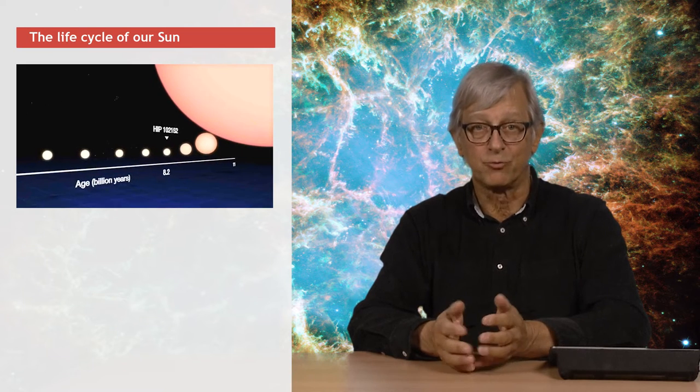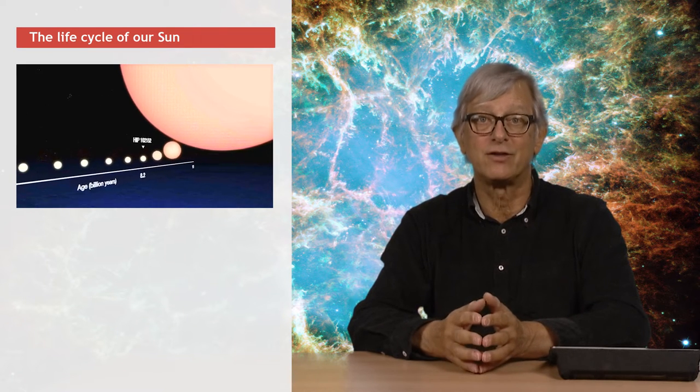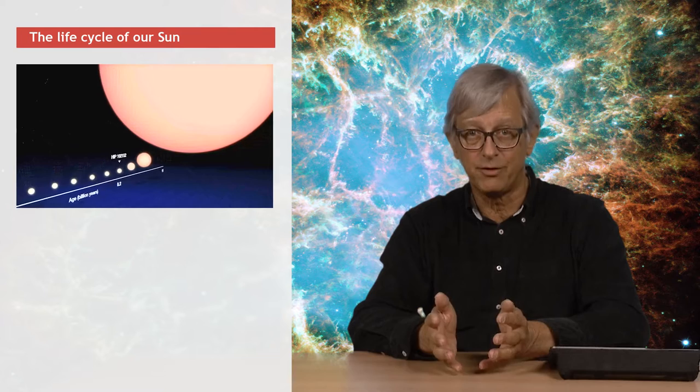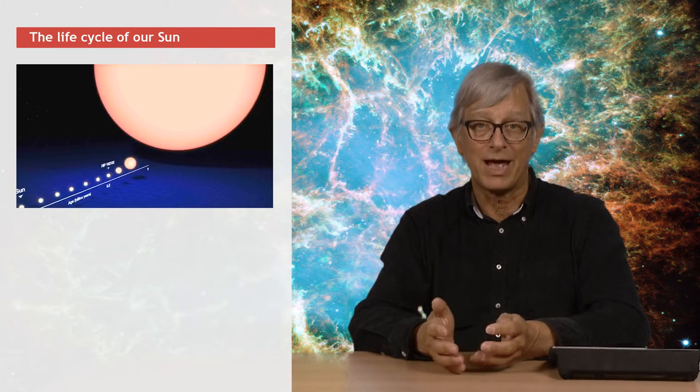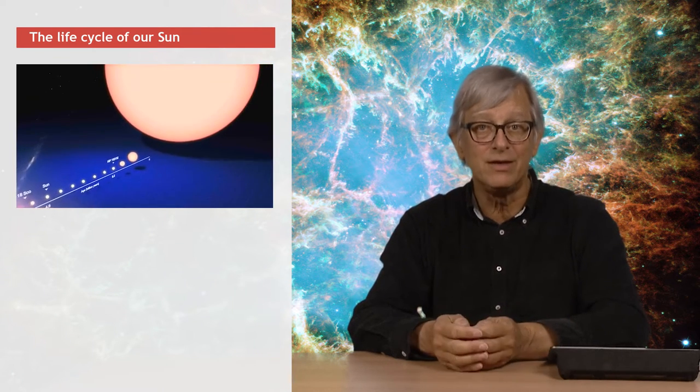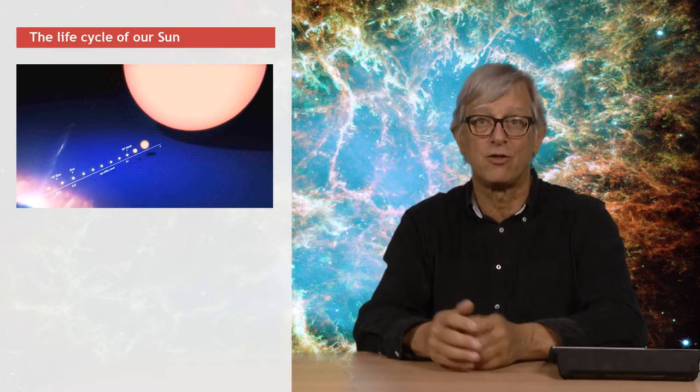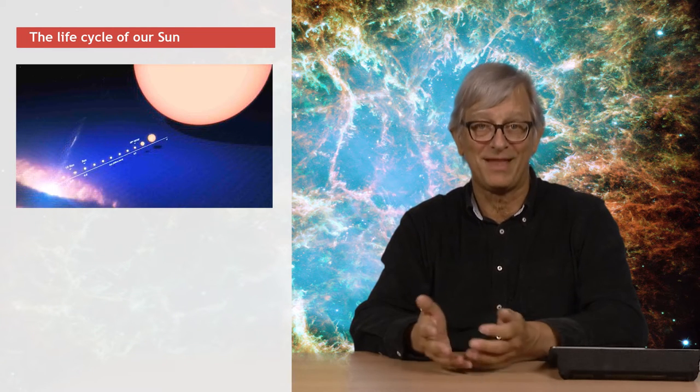When the hydrogen runs out, briefly, the sun becomes a red giant star. It swallows the Earth, but then it dies. What happens is that basically gravity, which has been trying to collapse the sun all along, takes over, and wins. Gravity, in the end, always wins.